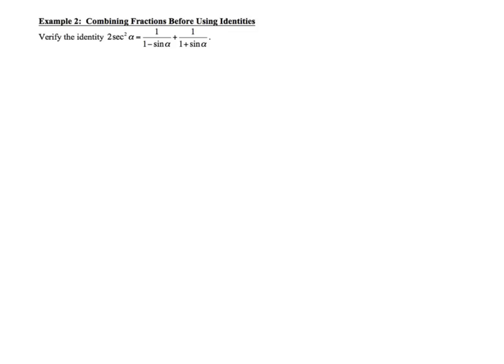Well, if we want to simplify this, obviously the right side looks a little bit more difficult. So we're just going to simplify the right. And we need a common denominator. So our common denominator is going to end up being 1 minus sine of alpha times 1 plus sine of alpha.